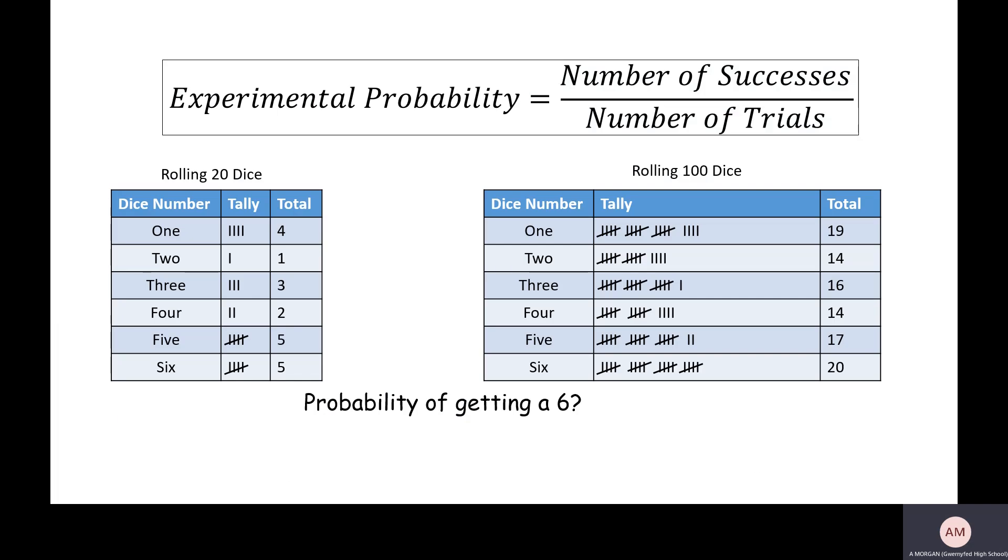We've got a formula which is if we want to calculate experimental probability, the formula we use is number of successes over number of trials. So that is for things which either we don't know the probability of, or we're just checking the probability of, or we're unsure of the probability of.